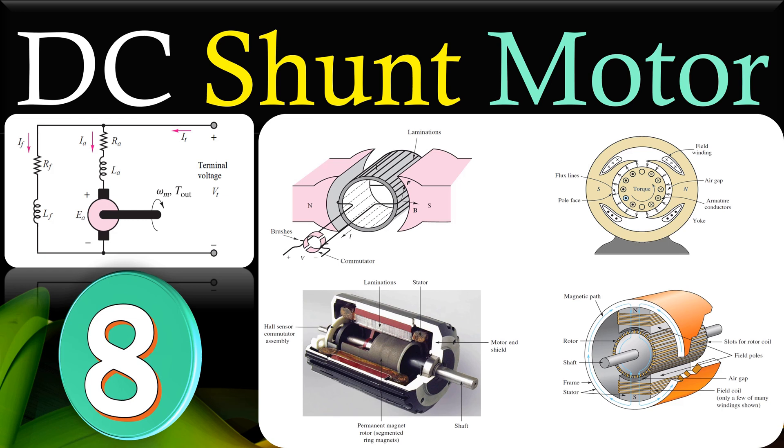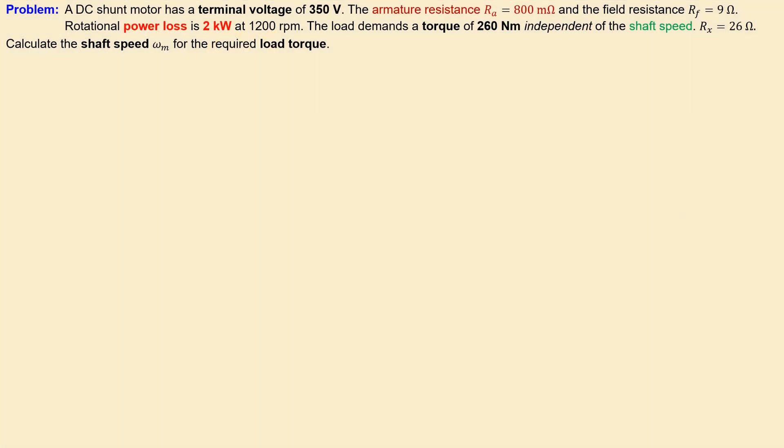Hi everyone and welcome to a new video about DC shunt motors. In this example I will discuss another problem where we have a series resistor in the field winding to adjust the motor shaft speed and this is our example number eight. So let's look at our problem.